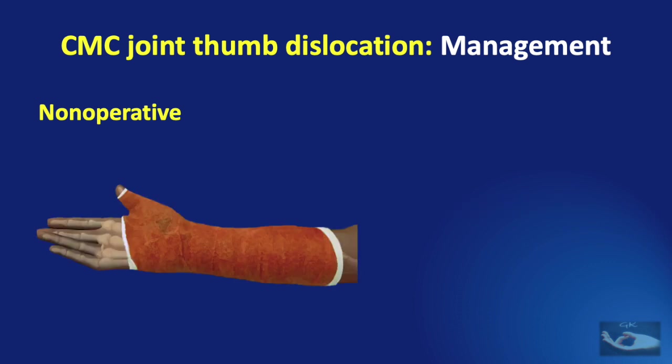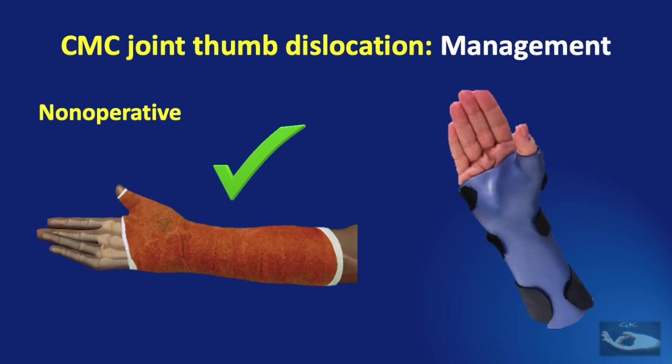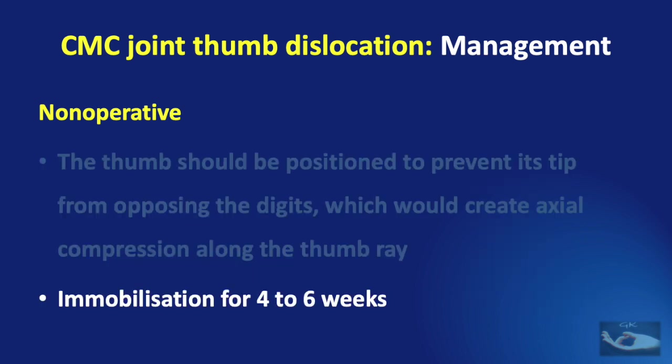This implies that the cast must include the interphalangeal joint of the thumb, and not leave it free. This immobilization must be maintained for four to six weeks.